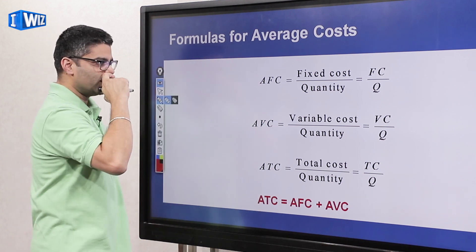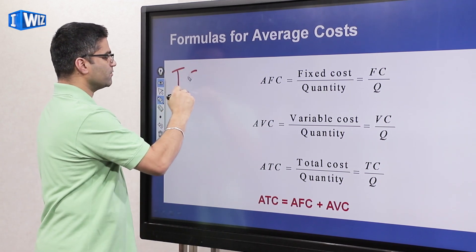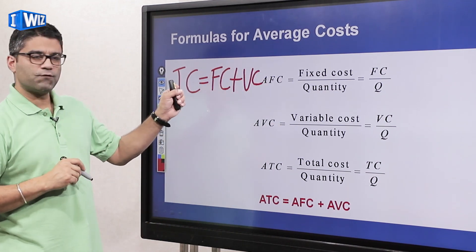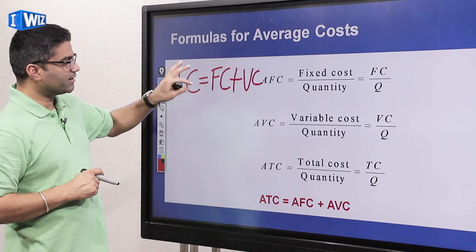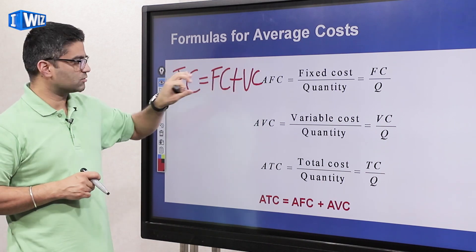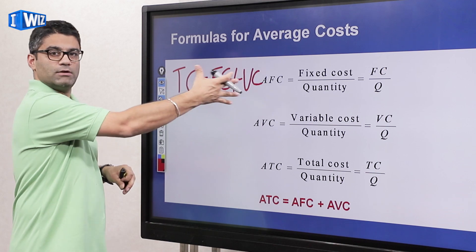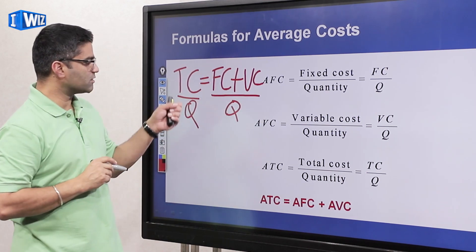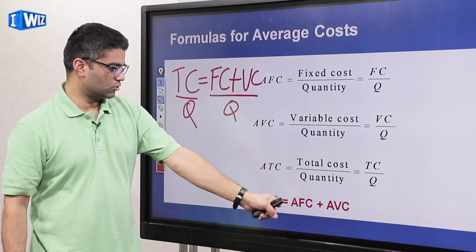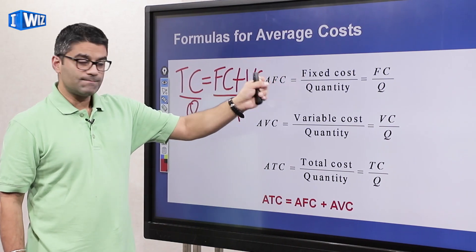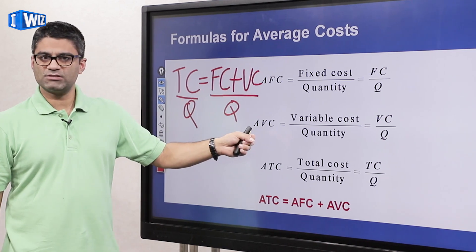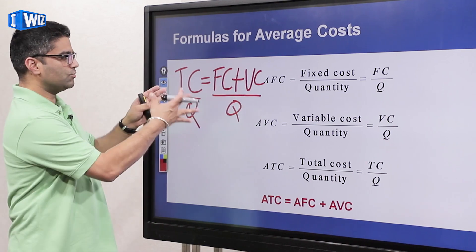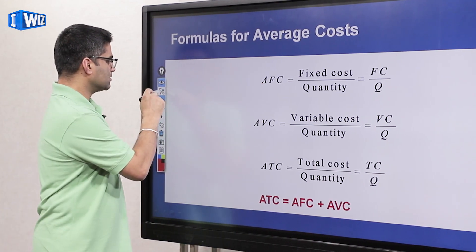The relationship you've already seen is that total cost equals fixed cost plus variable cost. We go from totals to averages by dividing the whole equation by Q: total cost divided by Q gives you average total cost (ATC), FC divided by Q gives you AFC, and VC divided by Q gives you AVC. So we're just deriving these three concepts from the equation you already know. Make sure you understand where these equations come from.